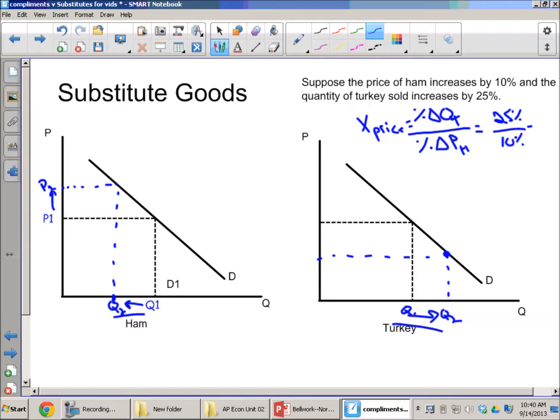And actually we're going to need to make sure we put our signs in. In this case, right, the price of ham has increased—that's a positive. But the quantity of turkey sold has also increased—that's a positive. So our answer is going to be equal to 2.5.